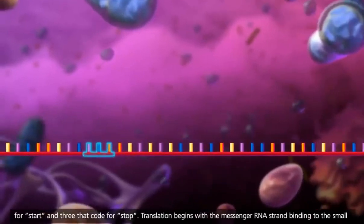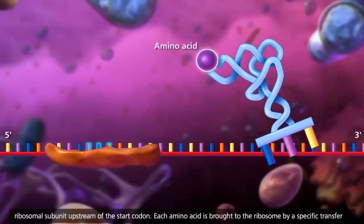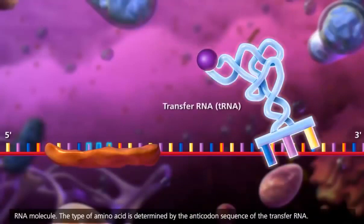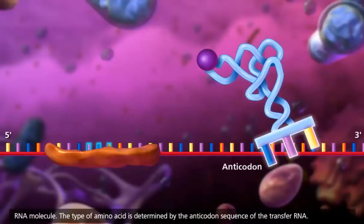Translation begins with the messenger RNA strand binding to the small ribosomal subunit upstream of the start codon. Each amino acid is brought to the ribosome by a specific transfer RNA molecule. The type of amino acid is determined by the anticodon sequence of the transfer RNA.